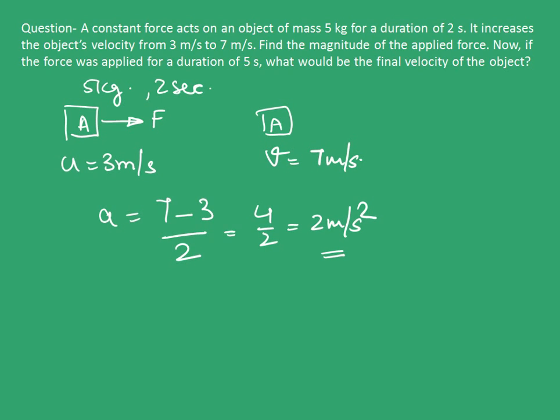Now, we have been asked to calculate the magnitude of applied force. So, what we learned was force equals to mass into acceleration. Mass of the body is 5 kg. So, 5 into acceleration we found out equal to 2. So, 2. Answer will be 10 kg meter per second square.